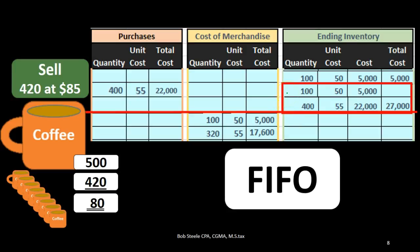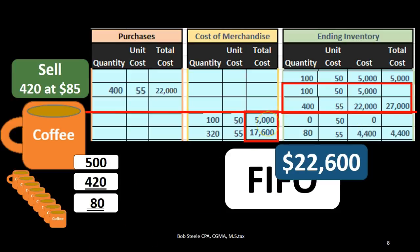For ending inventory: from the first layer, 100 minus 100 sold leaves zero units, so zero times $50 is $0. From the second layer, 400 minus 320 sold leaves 80 units at $55, which is $4,400. Zero from the first layer plus $4,400 from the second layer gives us $4,400 remaining in ending inventory. A question could ask for cost of goods sold ($22,600) or ending inventory ($4,400).